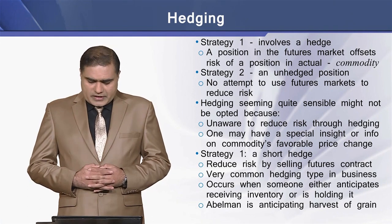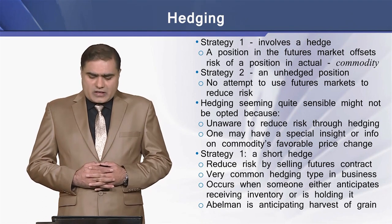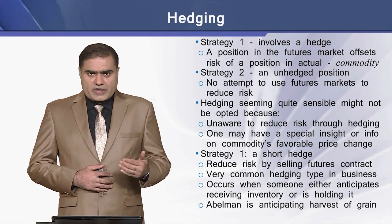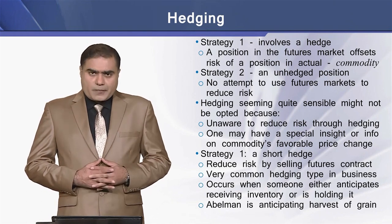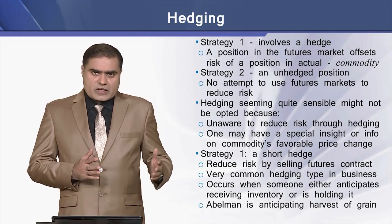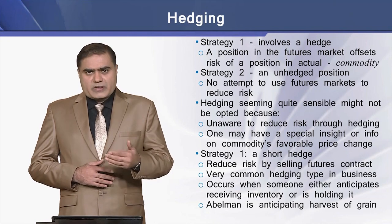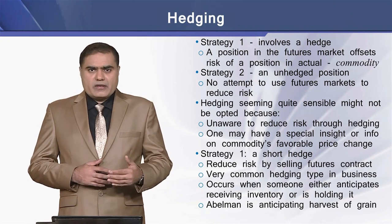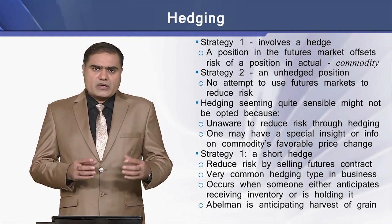In strategy one, the farmer taking a hedge position is termed a short hedge, as it reduces risk by selling future contracts. It is a very common hedge. It occurs where someone anticipates receiving inventory or is already holding that inventory. In our example, Abelman is harvesting wheat and taking a short hedge position.